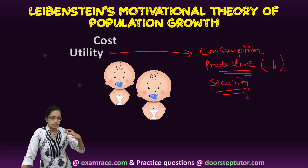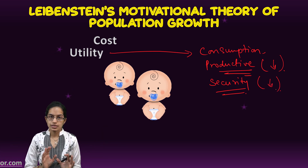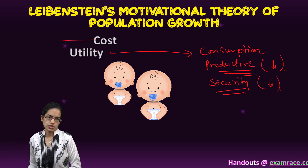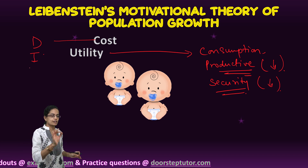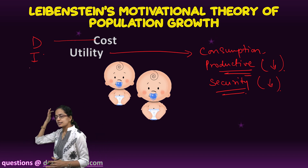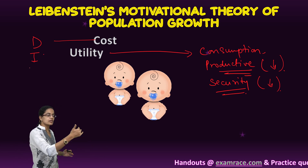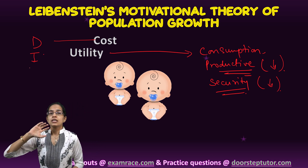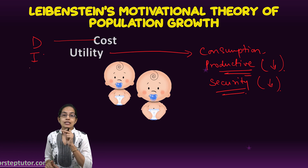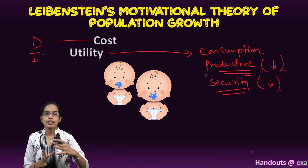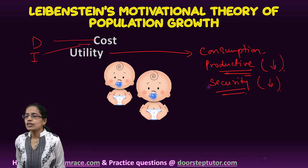The social old age security utility is the belief that the child would take care of the parents. However, with higher per capita income, people are more dependent on supporting staff for the same purpose. Moving on to costs associated with rearing a child, there are two types: direct cost and indirect cost. Direct cost covers food, clothing, and education. With higher incomes, this cost increases because wealthier parents would not send children to a free government school but rather to a private school, raising direct costs.